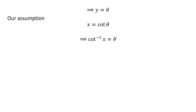As per our assumption, x is equal to cotangent of theta. Application of inverse function properties implies theta is equal to inverse of cotangent of x. So, y is equal to inverse of cotangent of x. Thus, the simplification of inverse of sine of 1 upon square root of 1 plus square of x is inverse of cotangent of x.